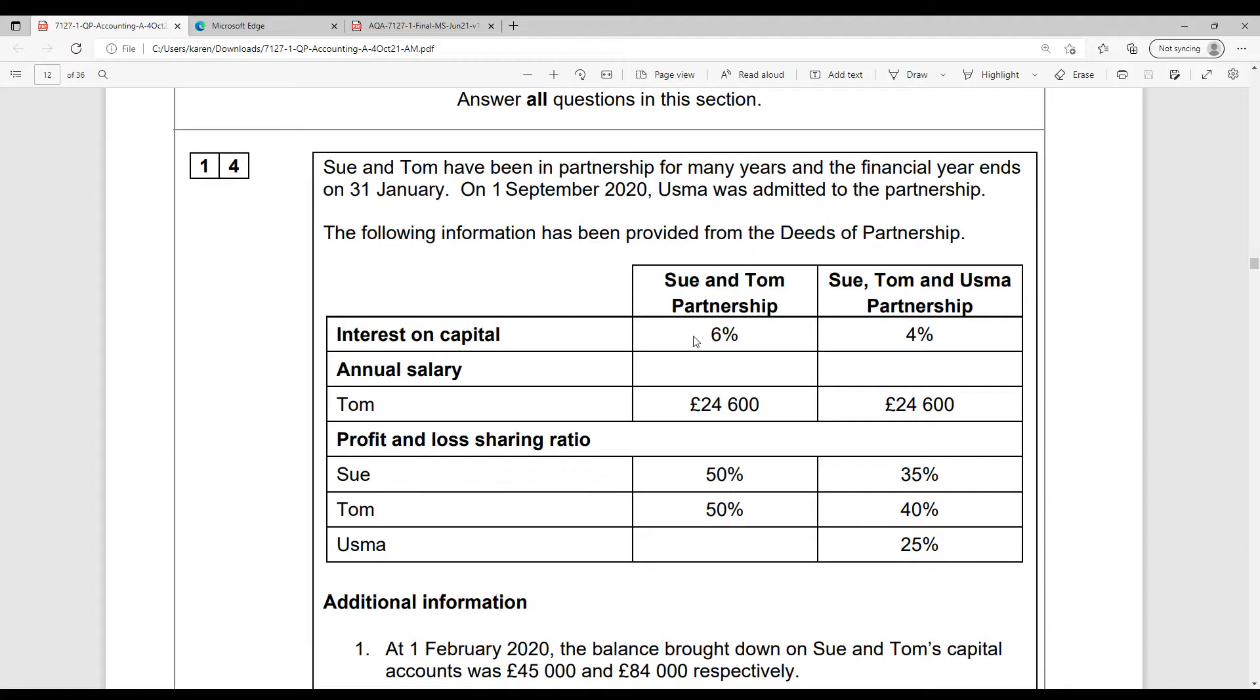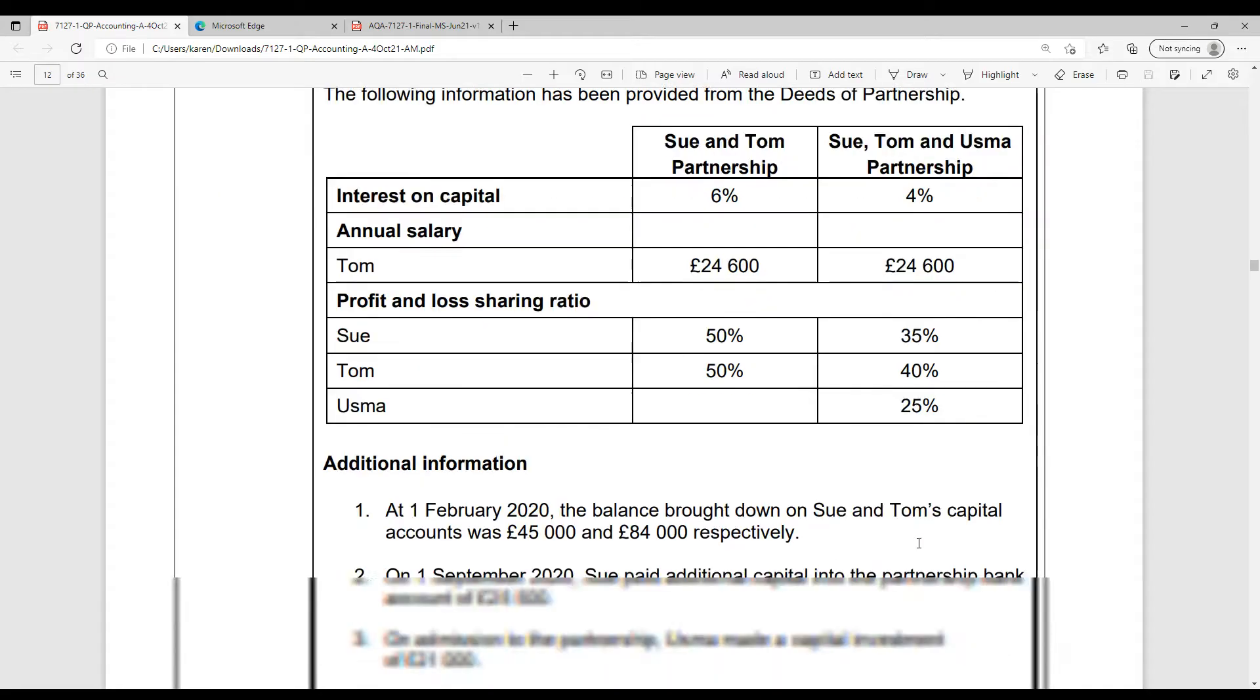We've got some information about before the change and after the change. Sue and Tom were in partnership originally. They were having 6% interest on their capital. Tom was receiving an annual salary, £24,600, and they were sharing their profits and losses equally. After Usma's joined the partnership, the interest on capital is going down to 4%. Tom is still getting his annual salary. Remember, this is an annual salary. It's not £24,600 for each of the periods before and after the change in the partnership. And then going forward, the three of them are going to share their profits, £35,000, £40,000, £25,000 each.